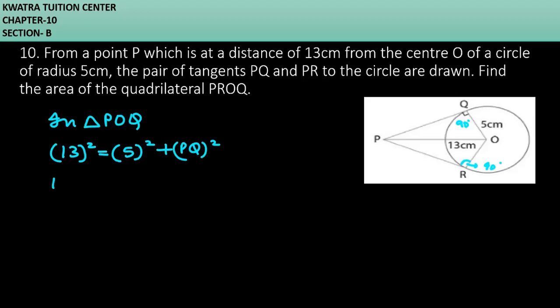13 squared is equal to 169. 169 minus 25 is equal to PQ squared. 169 minus 25 will give you 144 equals PQ squared. And PQ value is equal to 12 cm.